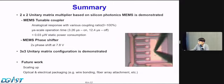In summary, we demonstrate a two-by-two unitary matrix multiplier based on silicon photonic MEMS. For the tunable coupler, analogical response from 0 to 100% is acquired, and we show microsecond-scale operation time. We report 0.03 microwatt static power consumption. For the MEMS phase shifter, we can achieve two-pi phase shift at 7.8 volts.